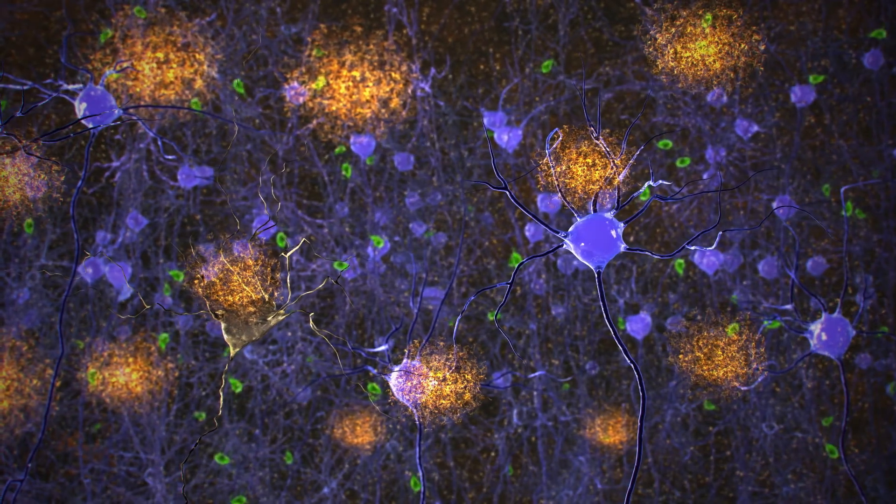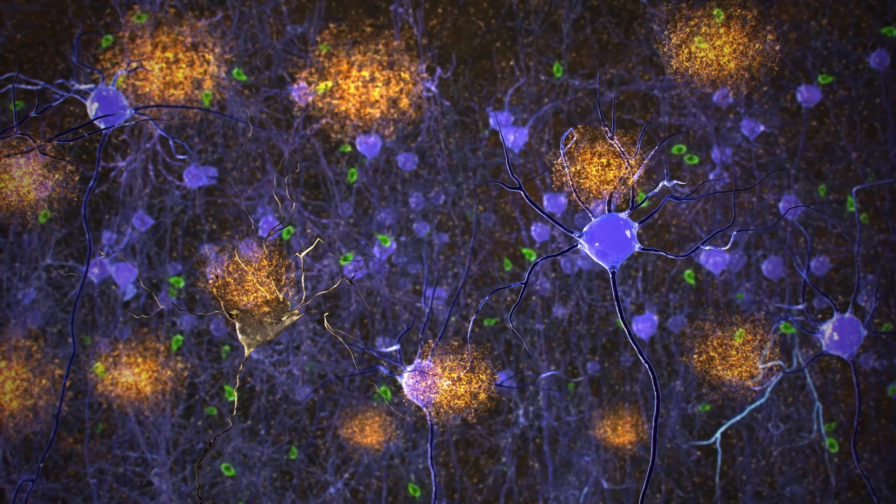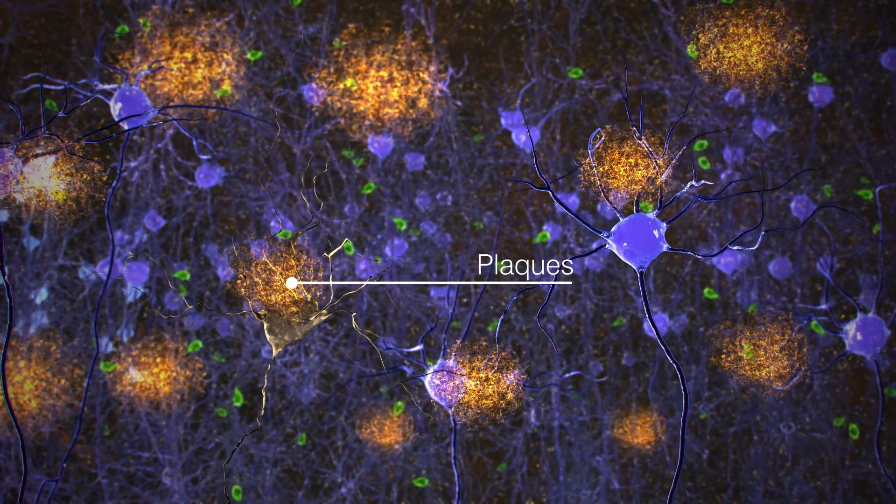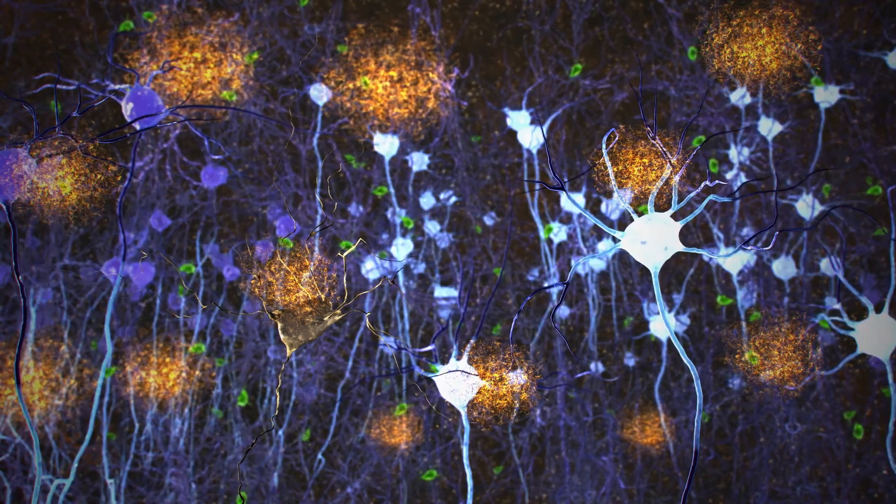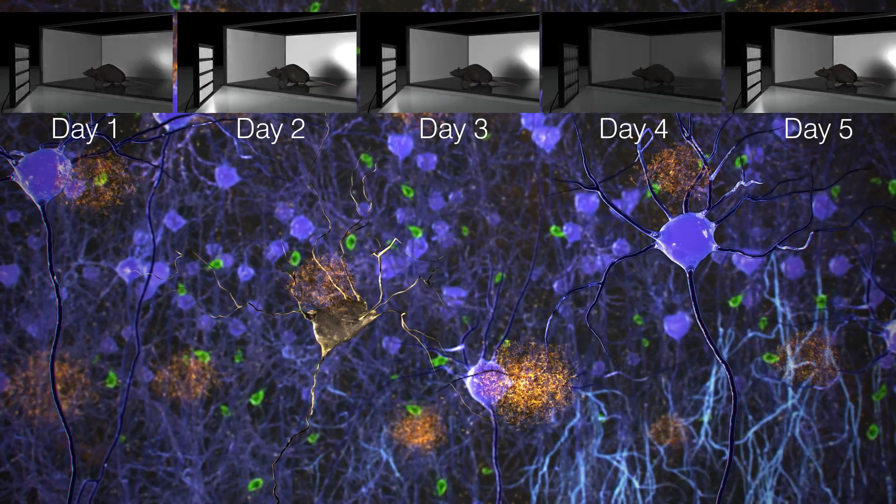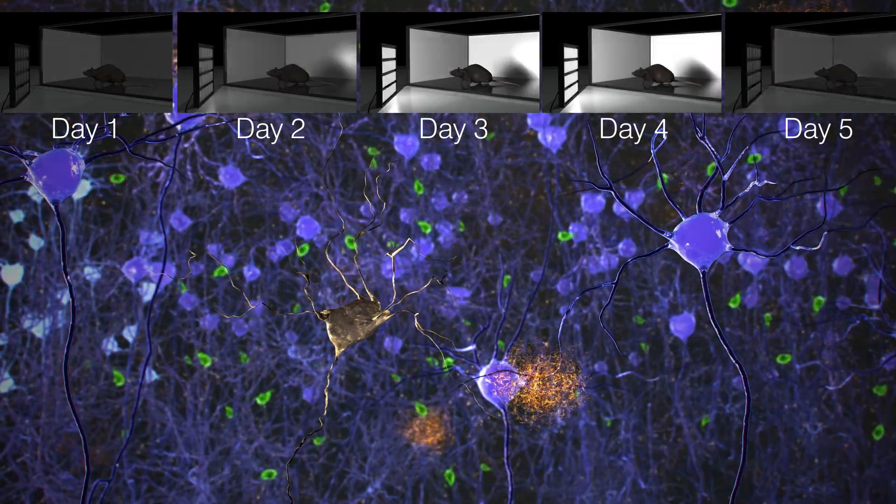When the gamma flickering light treatment was used in older Alzheimer's mice with toxic levels of amyloid beta, which results in aggregates called plaques, the plaques decreased. However, for the plaque levels to remain low, the flickering light treatment had to be given over several days versus hours.